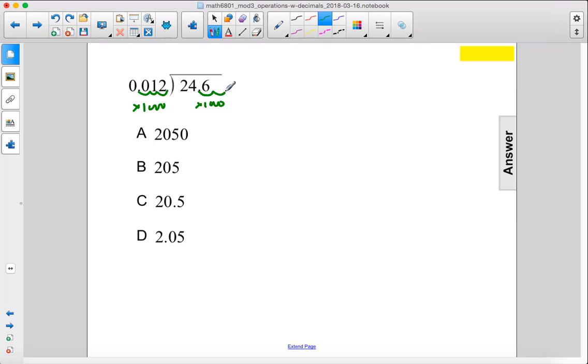So 1, 2, 3, we're going to have to add two zeros in there, which gives us 12 going into 24,600.